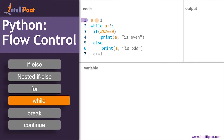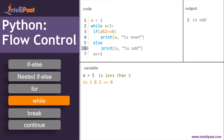Here's another example. Set a equal to one. Check the condition: while a is less than three — is one less than three? Yes, condition is true. Inside the while, check if a mod two equals zero — is one mod two equal to zero? No, condition is false. So we jump to the else part and print 'a is odd.' Since a is one, one is odd. Then increment a by one — one plus one equals two.